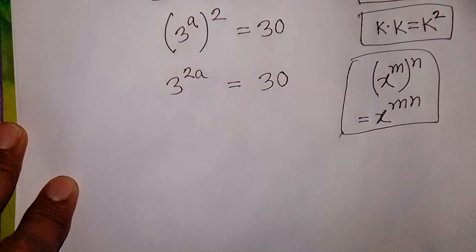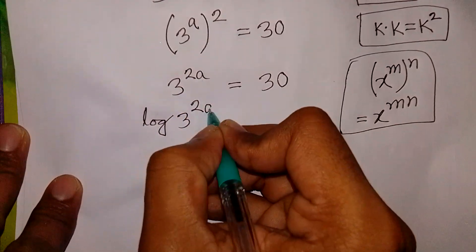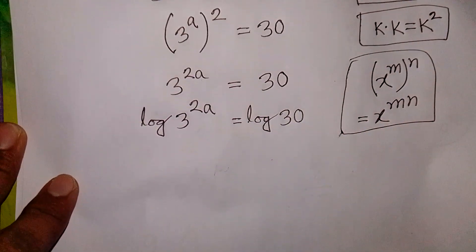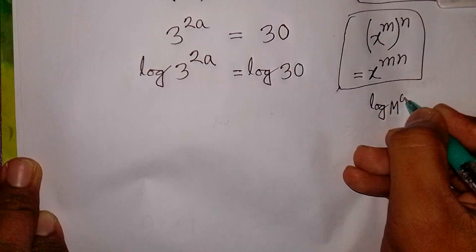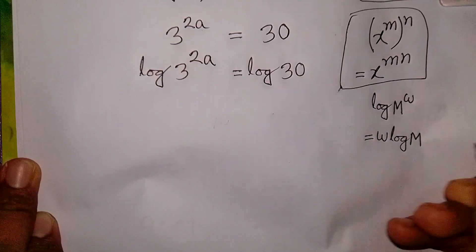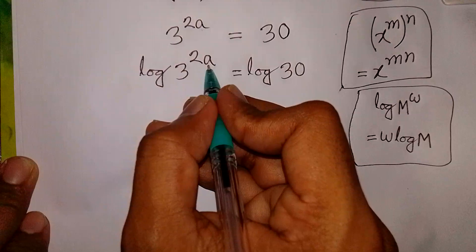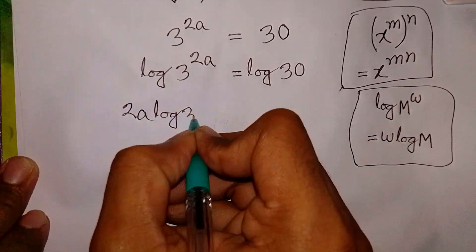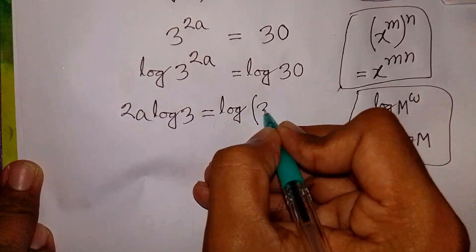Next step, we apply log on both sides. Log of 3 power 2A is equal to log of 30. Now, here we can apply the rule that log M power W is equal to W log M. This power W moves to the front. So this power 2A will move to the front, and it will be 2A log 3 is equal to log 30, which can be written as log of 3 times 10.